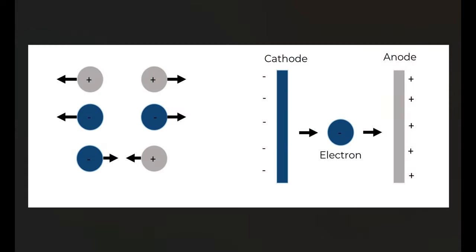Before we get too far into the operation of the x-ray tube itself, I want to talk a little bit about charges. If we have two positive charges, they will repel from each other. If we have two negative charges, they will also repel from each other, as we see here. And if we have two opposite charges, they're going to be attracted towards each other. This is basic electrostatics.